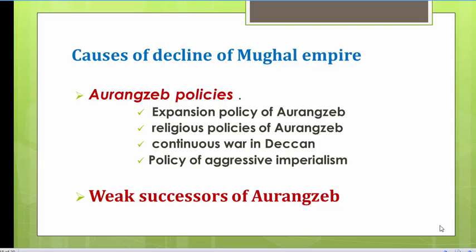The continuous wars meant the army was constantly busy fighting in the Deccan area, contributing to the decline. Another reason was the policy of aggressive imperialism — Aurangzeb's conquest of the Muslim kingdoms of Bijapur and Golconda removed the strongest local check over Maratha activities, leaving the Marathas free to organize resistance against Mughal imperialism. The weak successors of Aurangzeb — the later Mughals — were also a main reason for the decline.